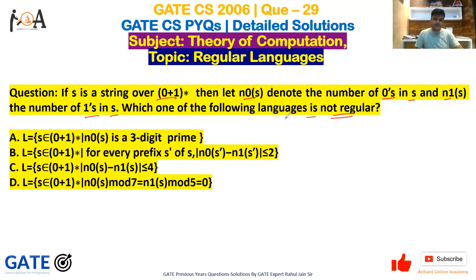Which one of the following languages is not regular? If you go with option A: L={s∈(0+1)*|n0(s) is a 3-digit prime}. This means n0 zeros, the representation of zeros or the number of zeros is a three-digit prime. Three-digit prime means it is finite—three-digit prime number, two-digit prime number, five-digit prime number, nine-digit prime number, any anything, let's say 100-digit prime number, they are also finite.